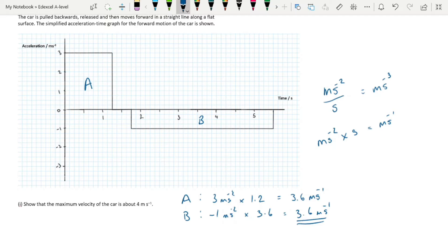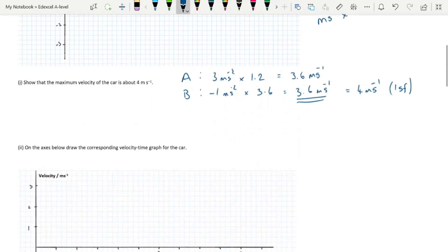You might think to yourself, well, that's not about 4, but actually, to 1 significant figure, that is 4. This is something that comes up a lot. They will give you the 1 SF version, and a lot of people doubt themselves when they get something like 3.6 or even 3.52. To 1 SF, that is still 4. You need to make sure that you don't doubt yourself. It doesn't guarantee that it's right, but if it rounds to that number to 1 SF, then the chances are you are correct.